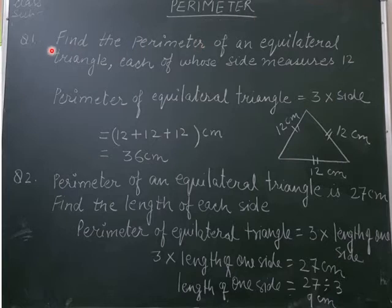First, find the perimeter of an equilateral triangle each of whose side measures 12 cm. Student, we already know what is the equilateral triangle. A triangle having all sides of equal length is known as equilateral triangle.